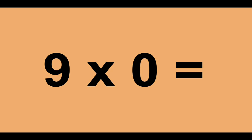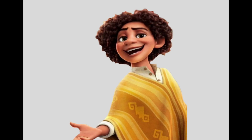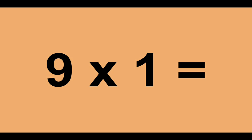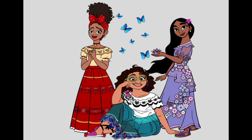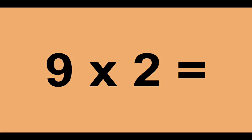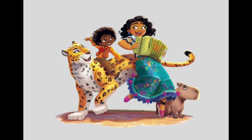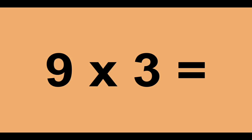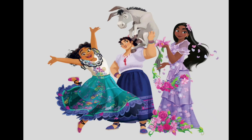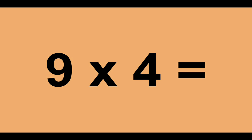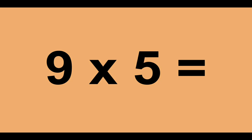9 times 0 equals 0. 9 times 1 equals 9. 9 times 2 equals 18. 9 times 3 equals 27. 9 times 4 equals 36. 9 times 5 equals 45.